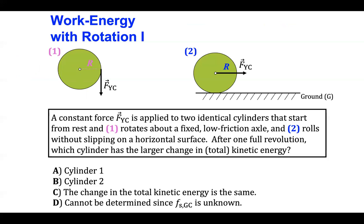Let's study the motion of both cylinders. Each cylinder will be a separate system. We'll apply the work-energy theorem to each cylinder. For the first cylinder that rotates about a fixed, low-friction axle, the cylinder is going to rotate clockwise about an axis of rotation through its center.